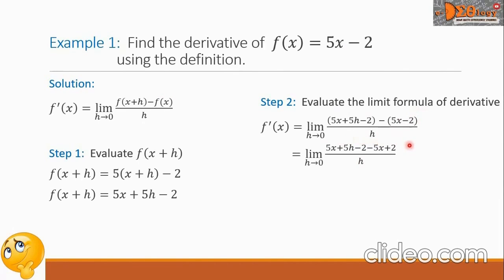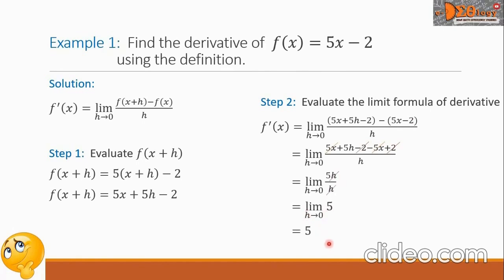We can see that terms in the numerator cancel: the 5x and negative 5x zero out, and the negative 2 and positive 2 also cancel. This leaves 5h over h, and the h's cancel, simplifying to the constant 5. Therefore the limit of 5 as h approaches 0 is 5, and this is our final answer — the derivative of our function.